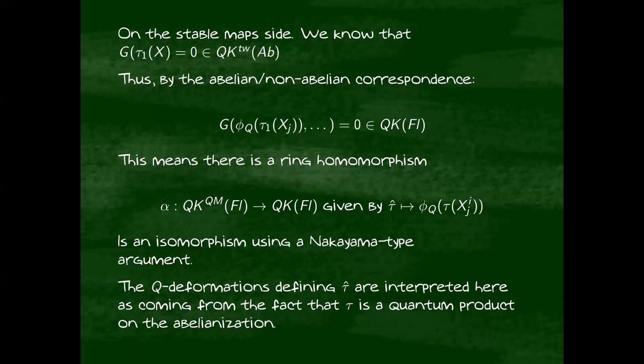This map is also an isomorphism by a Nakayama-type argument, starting from the fact that the map is kind of trivial once you set all of your q's to zero. This gives us an isomorphism between the quasi-map ring of the flag and the stable map ring. Under this isomorphism, we can say something about these otherwise mysterious quantum tautological bundles.